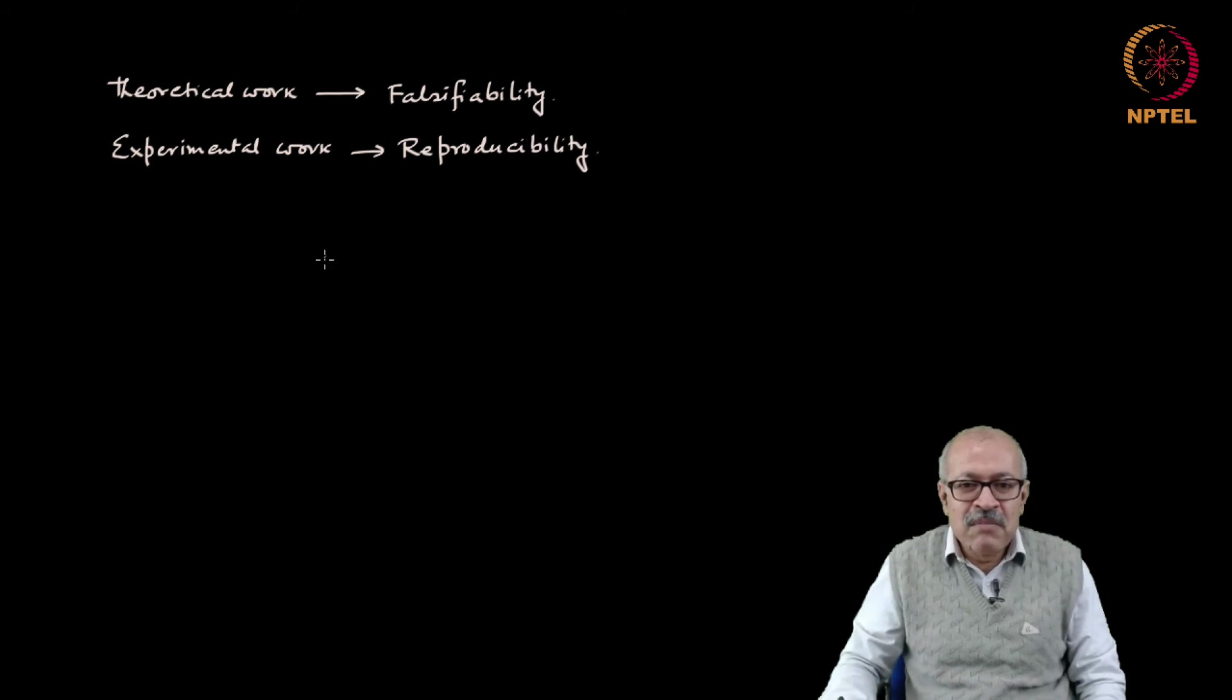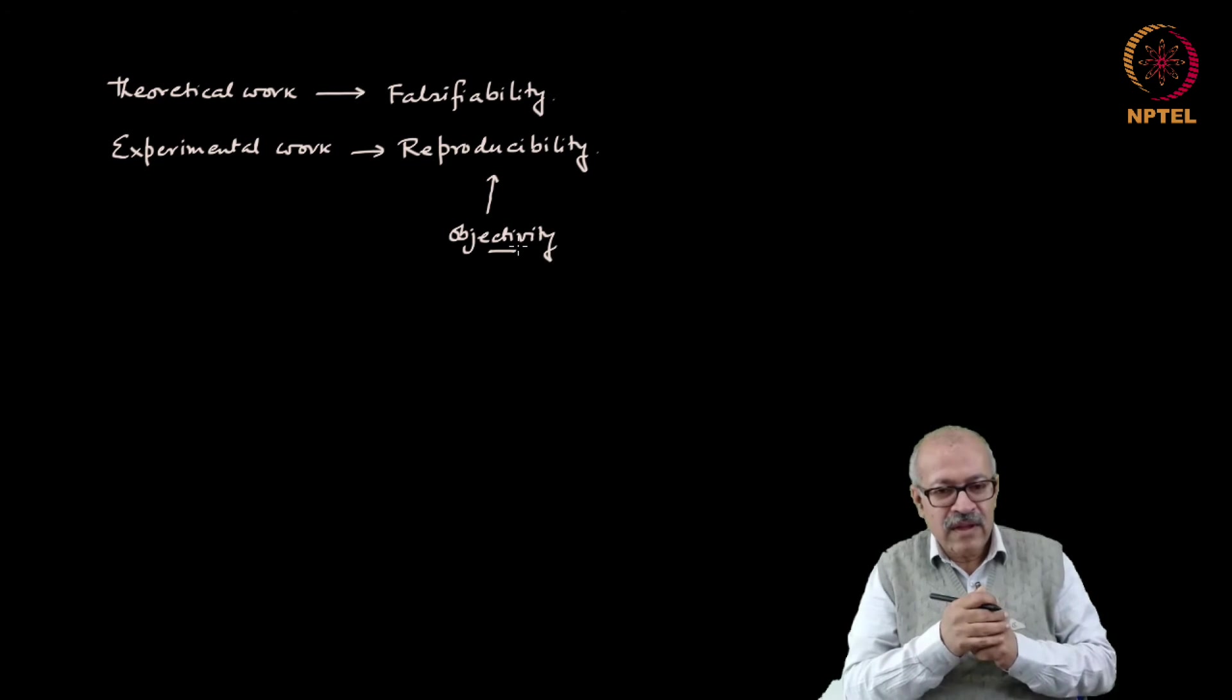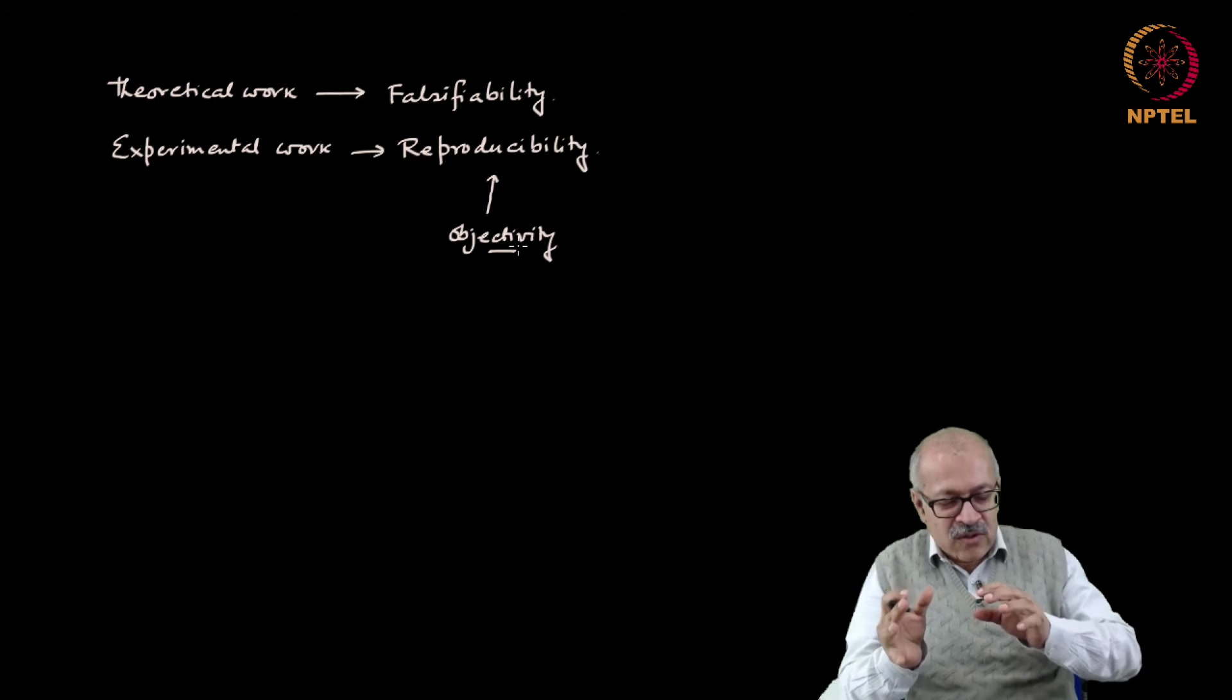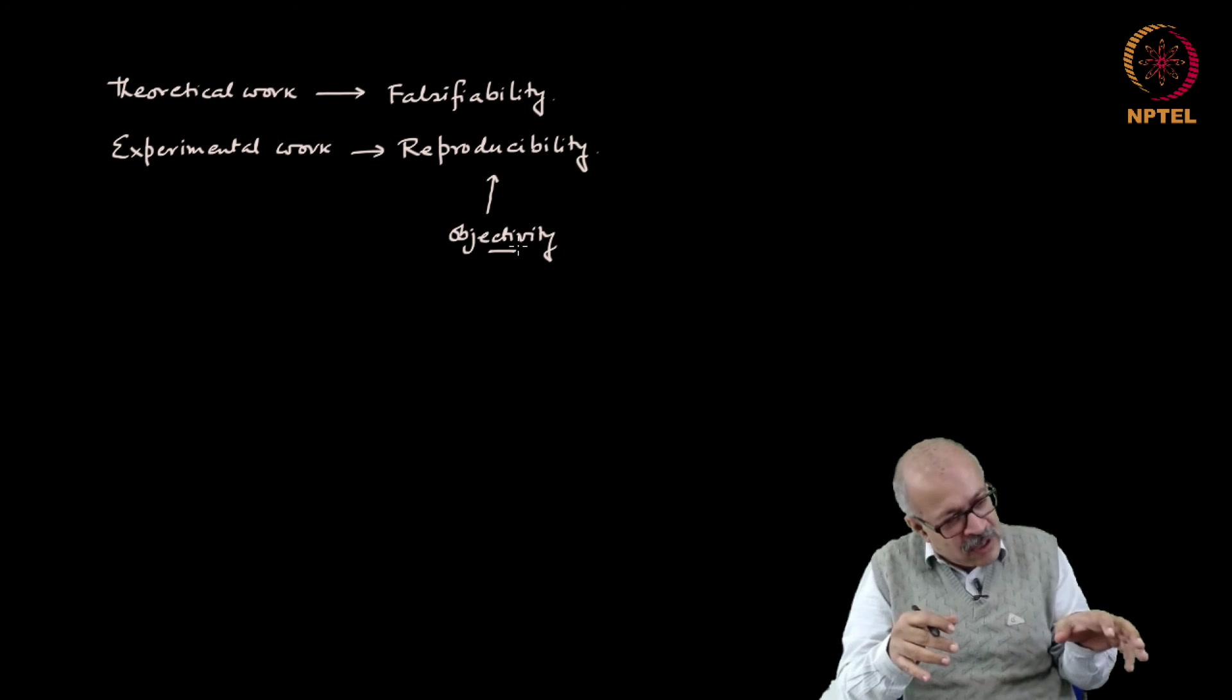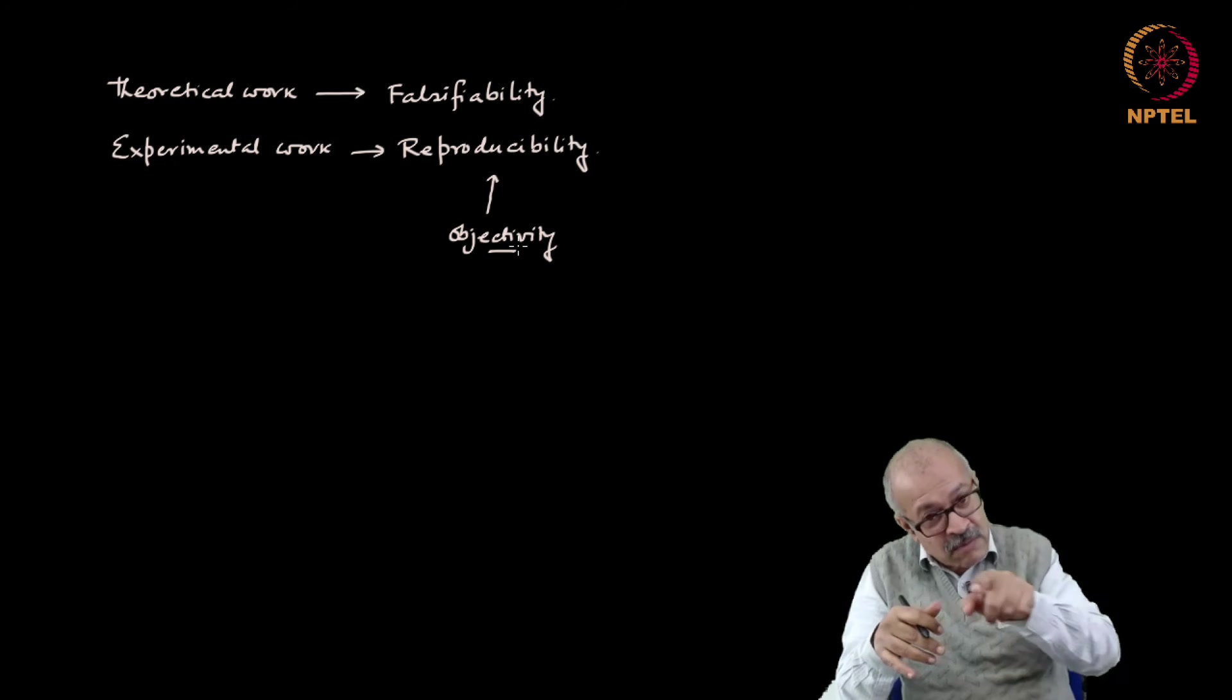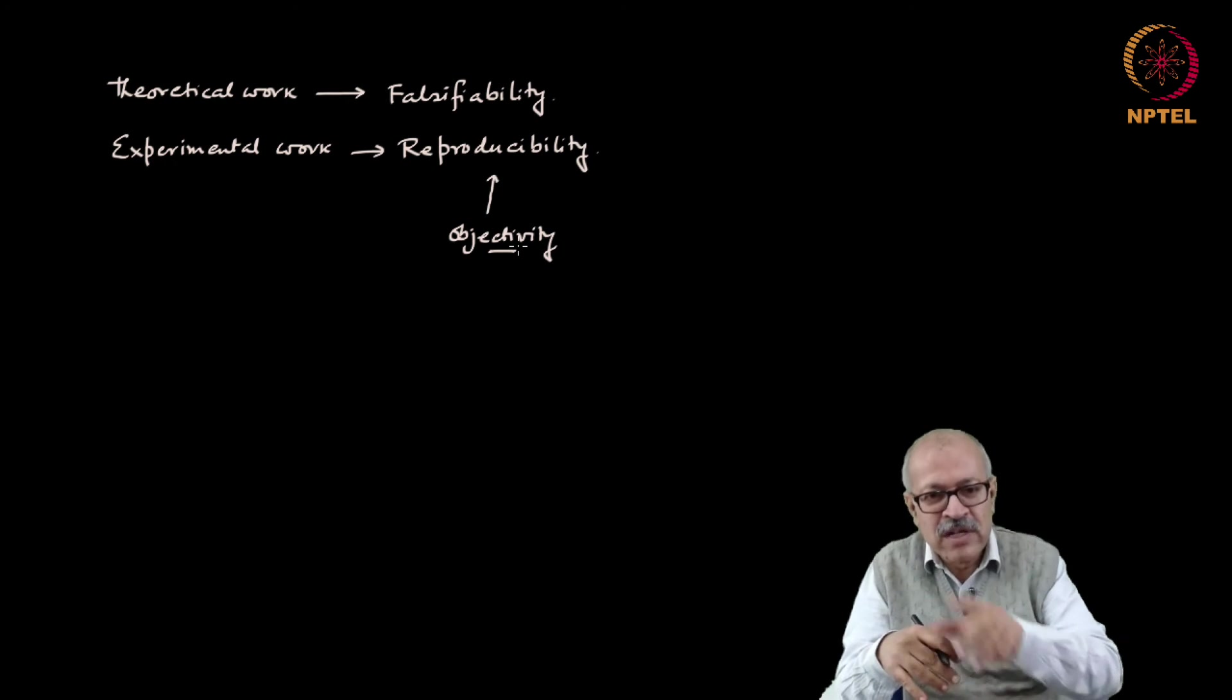So this demand of reproducibility comes from objectivity. So when we talked about subjective and objective, we need to incorporate that into the process of doing science, and it is incorporated by that. That an experiment should be reproducible.